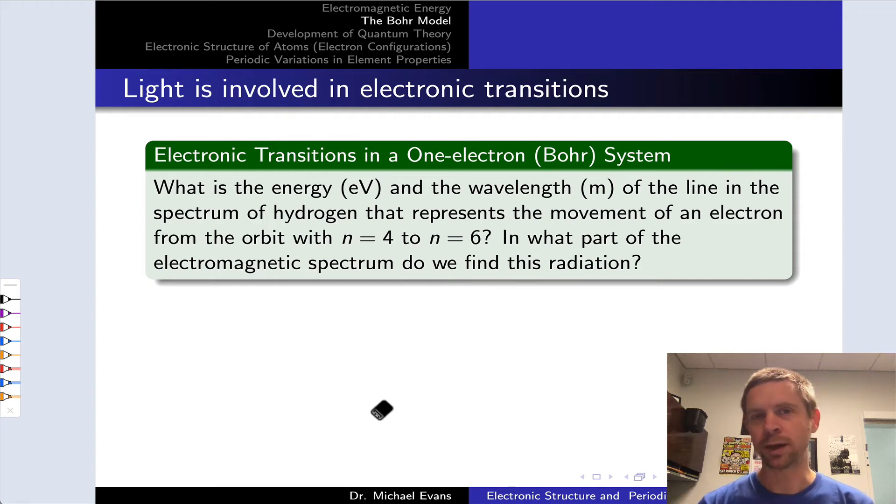Let's work a quick example problem where we apply the Bohr model of the atom and the Rydberg equation. The problem asks: what is the energy and the wavelength of a line in the spectrum of the hydrogen atom that represents the movement of an electron from the orbit or energy level with n equals 4 to the level with n equals 6? And in what part of the electromagnetic spectrum do we find this radiation?